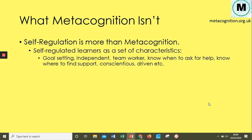Metacognition will cover some characteristics of self-regulation, such as having a range of strategies or knowing when to ask for help, but it won't cover all of them, such as goal setting. So it falls within the self-regulation umbrella, but it isn't all of it.